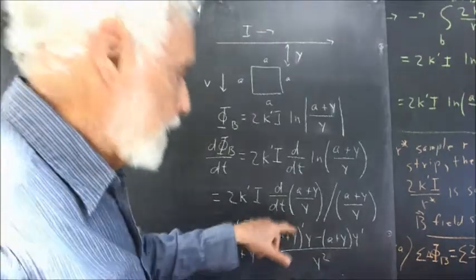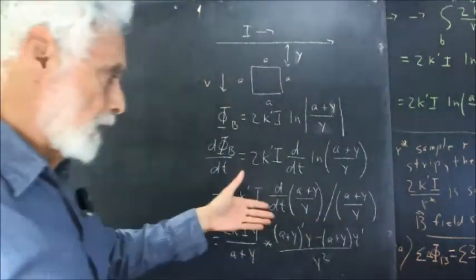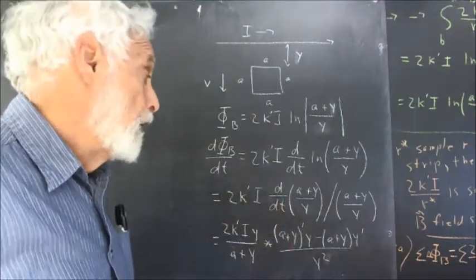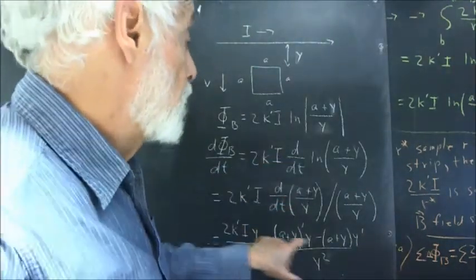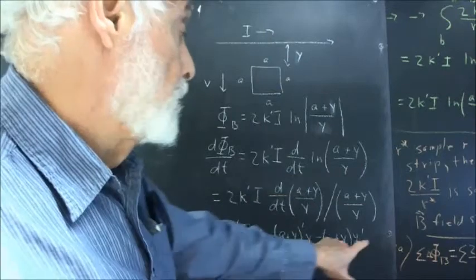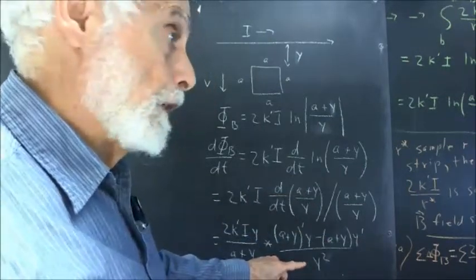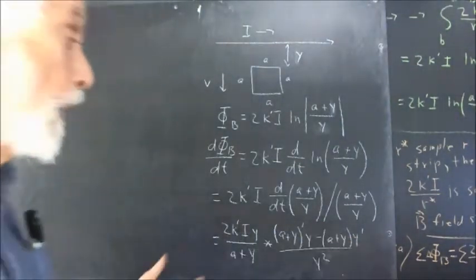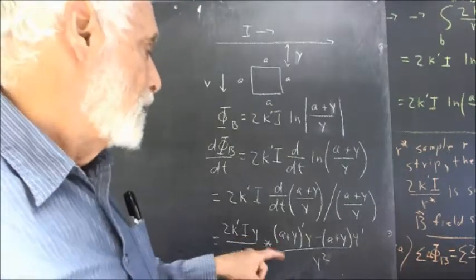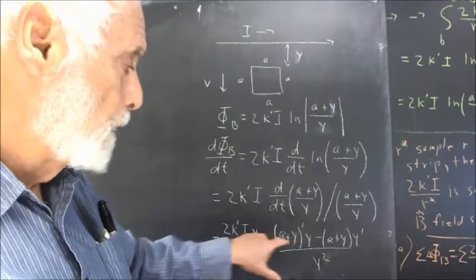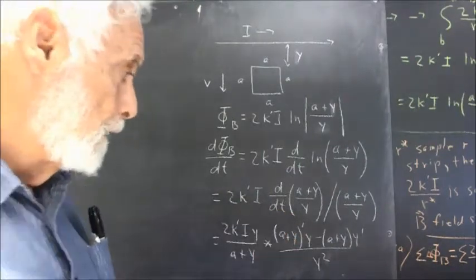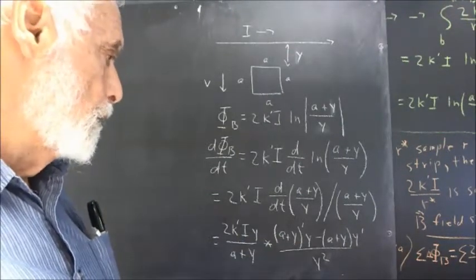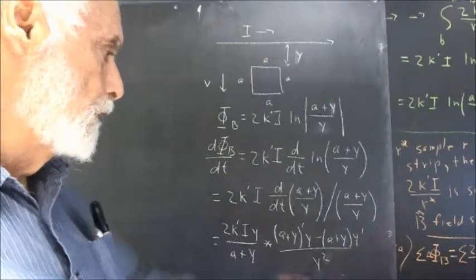I'm going to switch to using primes instead of writing out d/dt — it's a little neater — and we understand that prime means derivative with respect to time. So we have: the derivative of the numerator times the denominator, minus the numerator times the derivative of the denominator, divided by the square of the denominator. Now, what's y prime? The derivative of (a + y) prime is just the derivative of y prime, a being a constant, its derivative is zero. So we're going to get y prime · y here, and we're going to get a · y · y prime.